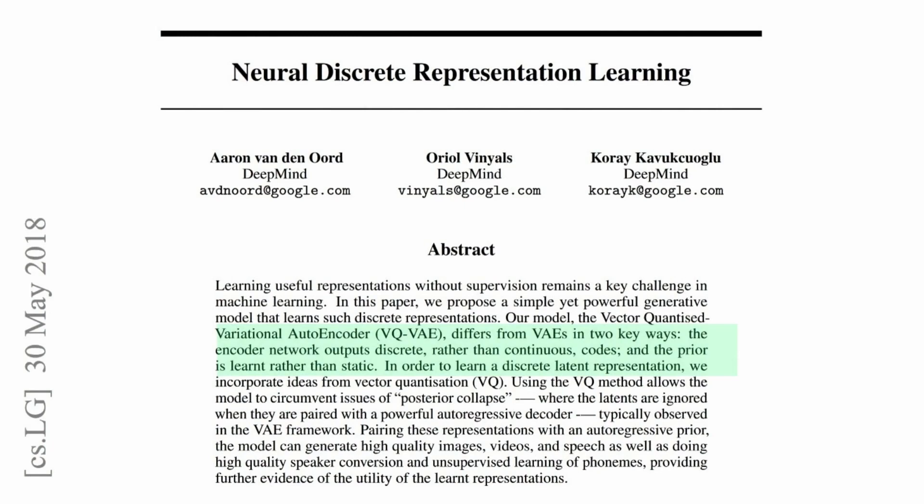The original research paper you see here is from May 2018 from Google, and it was called Neural Discrete Representation Learning. They specified the two main differences from variational autoencoders: first, the encoder network outputs discrete rather than continuous codes, and second, a prior is learned rather than a static Gaussian distribution.